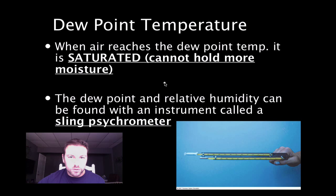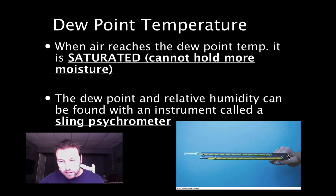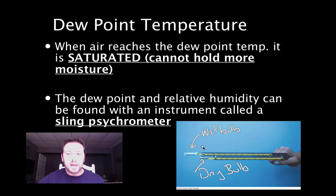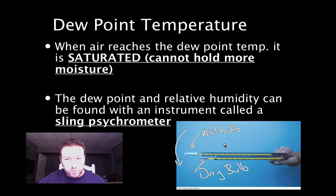We can find the dew point temperature using what's called a sling psychrometer. The sling psychrometer has a little handle and two thermometers on it — a wet bulb and a dry bulb. The wet bulb has a little cotton gauze that gets wet, and then you sling the whole thing around. By finding the difference in temperature between the wet bulb and dry bulb, we're able to find the dew point temperature using a chart in our reference table.